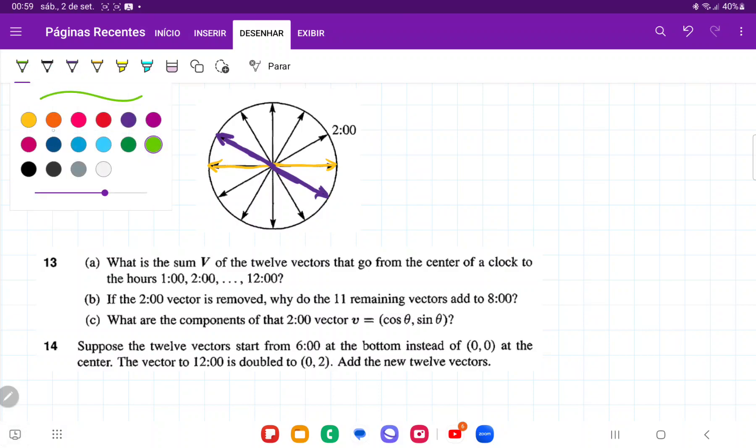We're going to have, let me do different colors, we're going to have this vector that pulls 60 degrees upwards, and then this vector that pulls 60 degrees downwards. We're going to have this vector that pulls 120 degrees, and then this one as well, and then we're going to have this one that cancels out with that one because they're going in opposite directions.